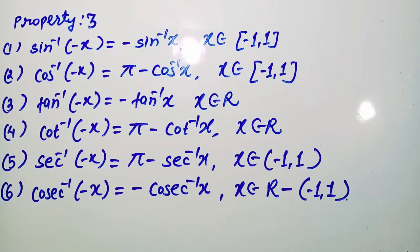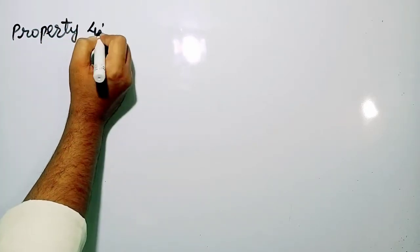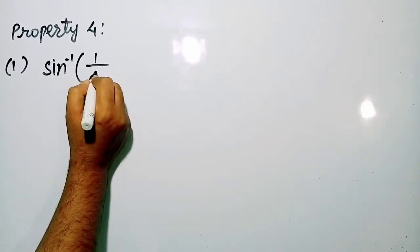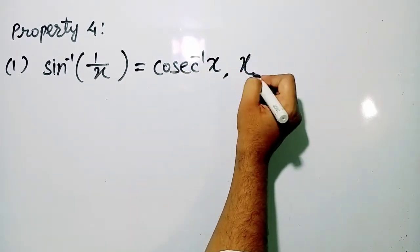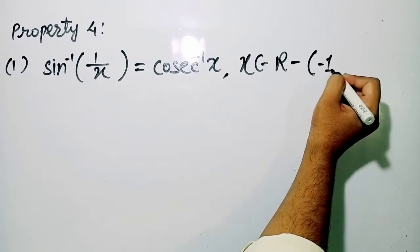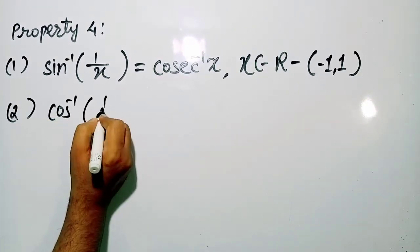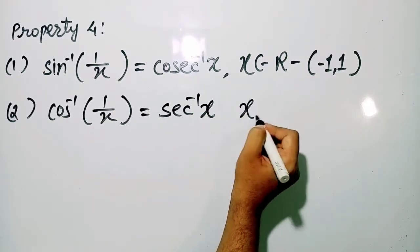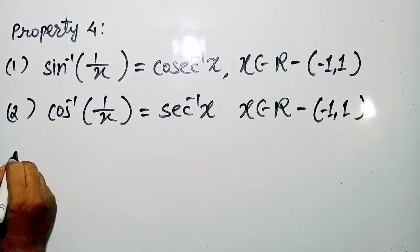Okay students, these are the third properties of inverse trigonometric functions. Now moving to property number 4. The first one is: sin⁻¹(1/x) = cosec⁻¹ x, where x belongs to real numbers excluding the open interval (−1, 1). Second, cos⁻¹(1/x) = sec⁻¹ x, where x belongs to real numbers excluding the open interval (−1, 1).